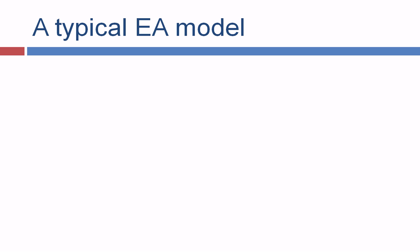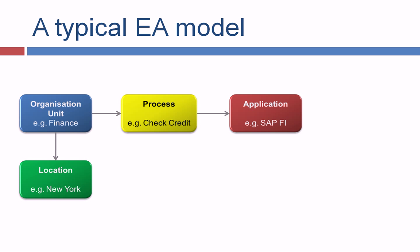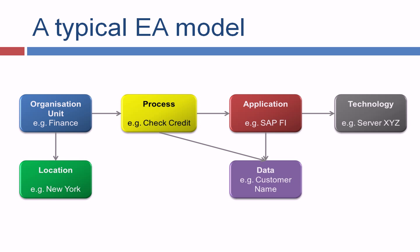So what does a typical EA model contain? First, in the center we have our organization units — in this example, Finance. This organization unit is located on a location, for example New York. Organization units normally perform processes like 'check credit.' Processes are supported by applications — in this case SAP FI. Applications also use data like customer name, and processes use data as well. Applications run on technologies — in this case a server XYZ — and the server is also location-based, in this case Vienna, a nice place in Austria.